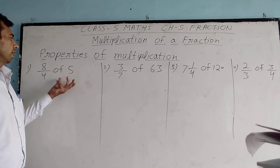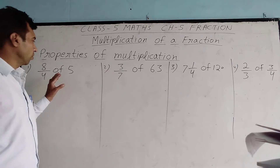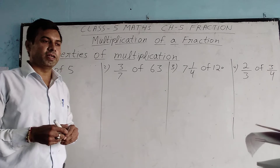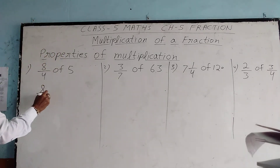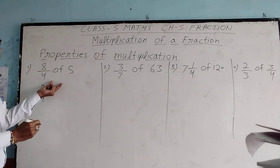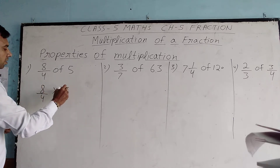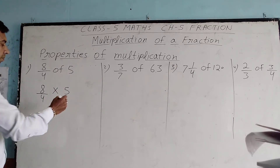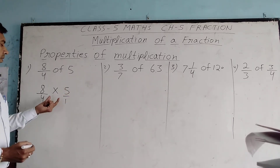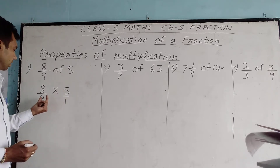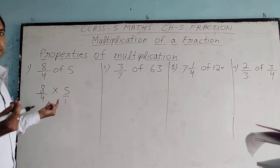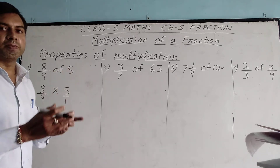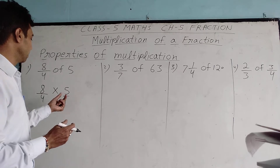In multiplication of fractions, instead of the multiplication sign, 'of' is sometimes written. This 'of' means multiplication. For example, 8 by 4 of 5 — we put a multiplication sign in place of 'of'. If nothing is in the denominator, it means it is 1. We can then cut numerator with denominator if possible. If not, we multiply numerator by numerator and denominator by denominator.